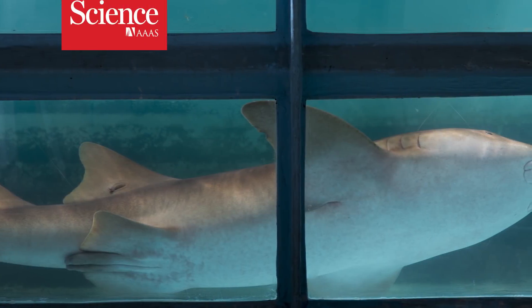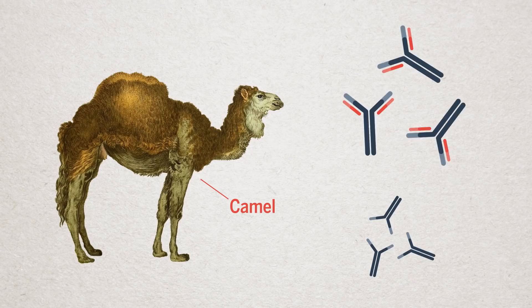These sharks are growing miniature antibodies. First discovered in camels in the 1980s, these tiny antibodies, about one-half the size of conventional ones, are also produced by sharks, llamas, and a few other animals.